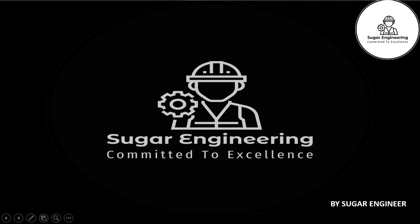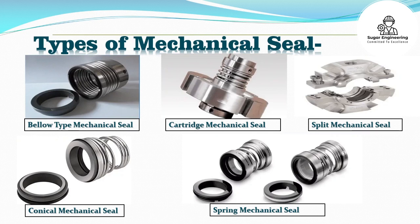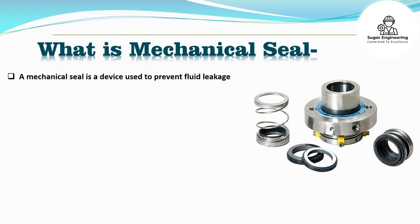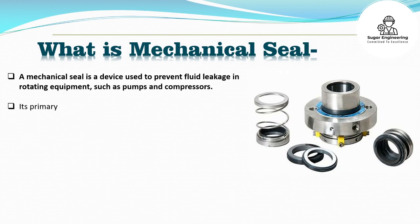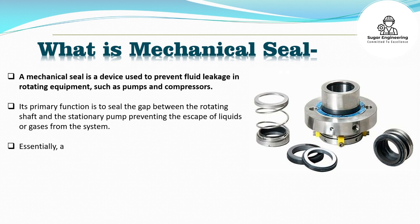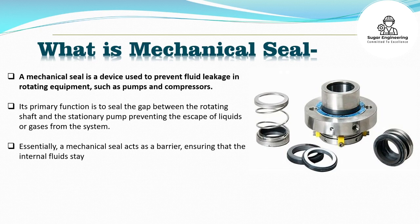Hello everybody. Welcome back to our channel Sugar Engineering. Today we will discuss about the topic: types of mechanical seals. A mechanical seal is a device used to prevent fluid leakage in rotating equipment, such as pumps and compressors. Its primary function is to seal the gap between the rotating shaft and the stationary pump, preventing the escape of liquids or gases from the system. Essentially, a mechanical seal acts as a barrier, ensuring that the internal fluids stay where they belong and don't leak into the surrounding environment.